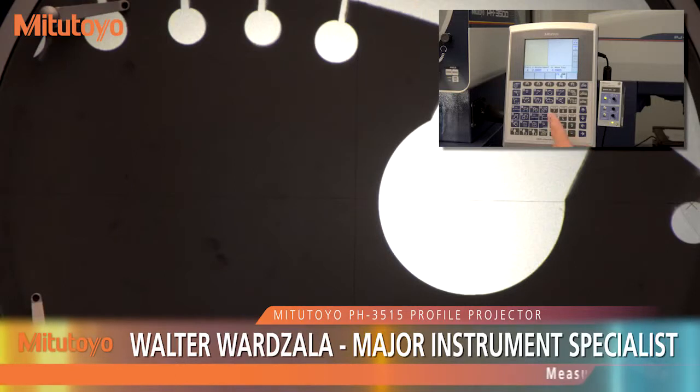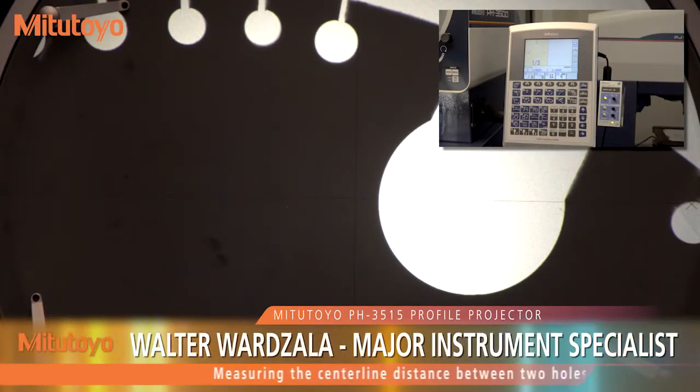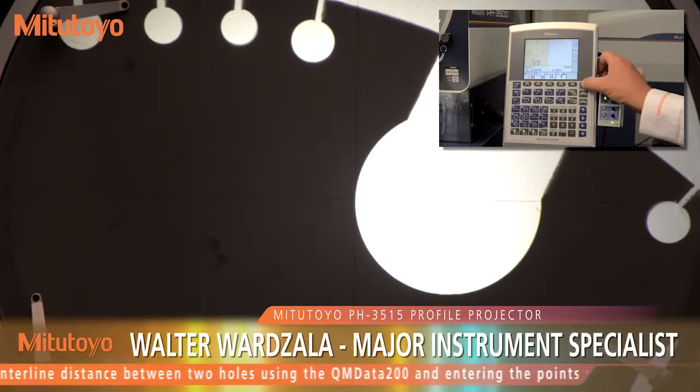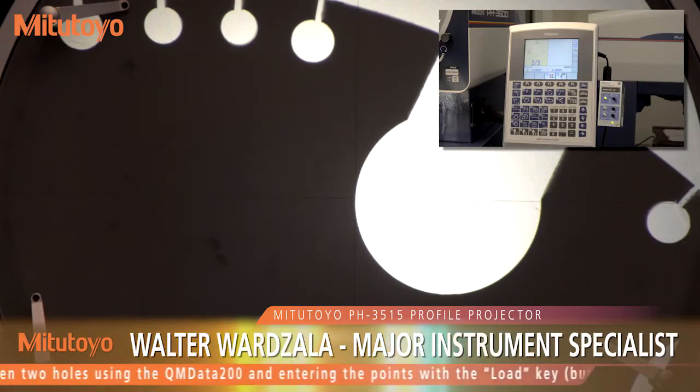To find the center line distance between two holes, first find the center of the holes by selecting Circle from the basic feature command keys. A minimum of three points need to be entered to determine a circle.